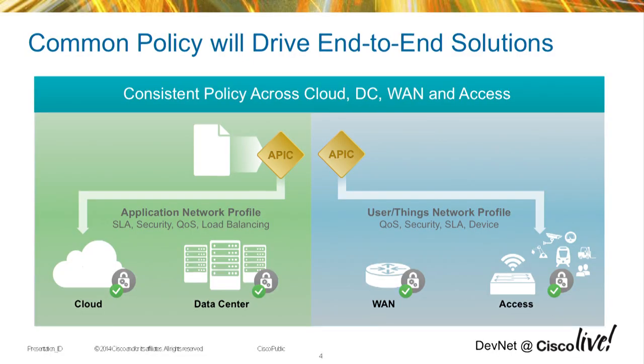At a high level, I want to address some common confusion around what APIC EM is compared to ACI and APIC DC. You're probably familiar with ACI in the data center — a policy-based approach simplifying the data center. APIC EM is the technology we're using to simplify the way customers run an enterprise campus and WAN. Those two environments are quite different, but the strategy we're working towards is a common policy between both. Today I'll focus on the APIC Enterprise Module for campus and WAN devices.